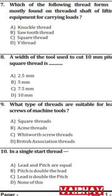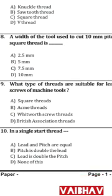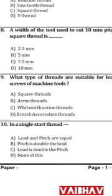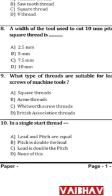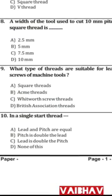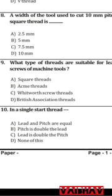Question 8: What is the width of the tool used to cut a 10 mm pitch square thread? The tool width equals half the pitch. Therefore, the answer is 5 mm — the tool width for cutting a 10 mm pitch square thread is 5 mm.